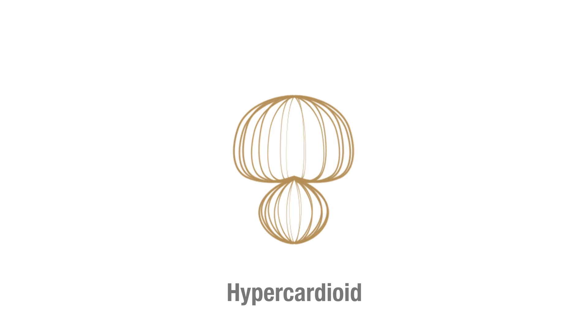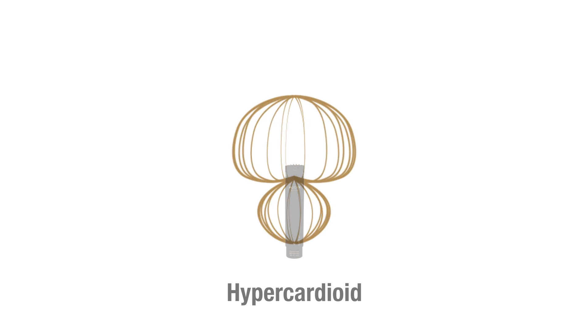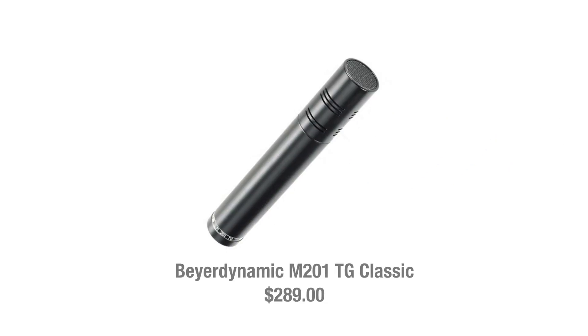The third pattern is the hypercardioid polar pattern. This pickup pattern is great for when you really want to isolate your audio source. From the graphical illustration, you can see that the major difference between cardioid and hypercardioid is the rear and side audio that is picked up. This type of pickup pattern mostly appears in small shotgun mics that are designed for instrument recordings. A good example of a hypercardioid microphone is the Beyerdynamic M201TG Classic.